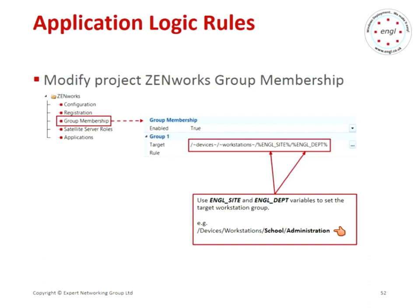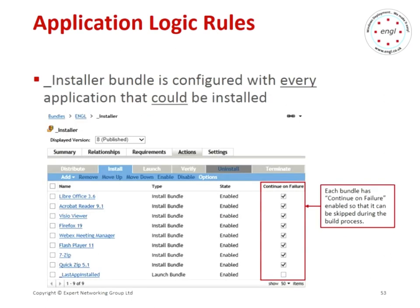Those settings will be expanded out during the actual build process. Our installer bundle has every bundle that we might want to install in any location, and you can set the order that you want the bundles to install. Each bundle has continue on failure enabled, because some of these bundles may get blocked by the build process if that machine is not supposed to have that application.